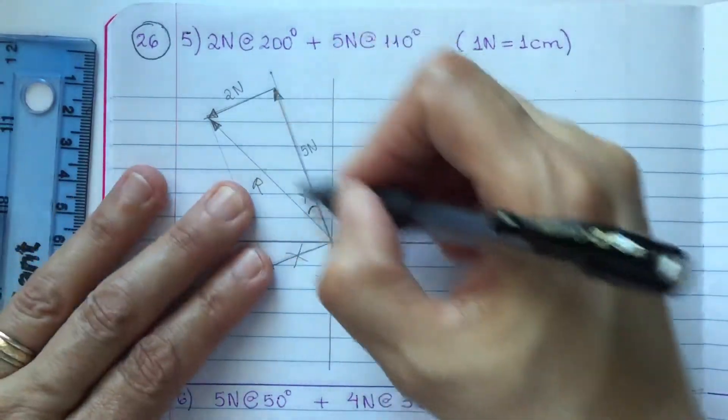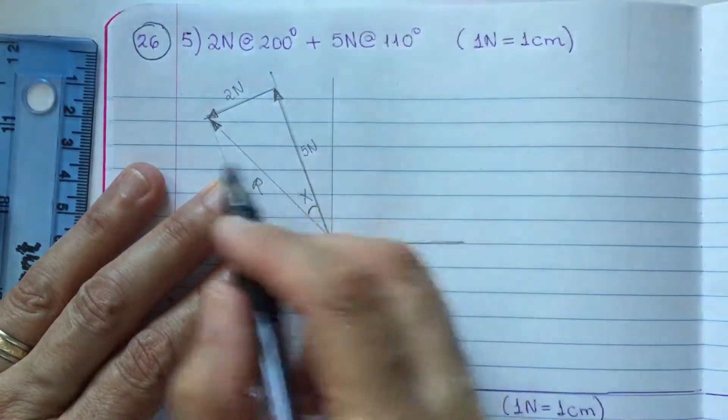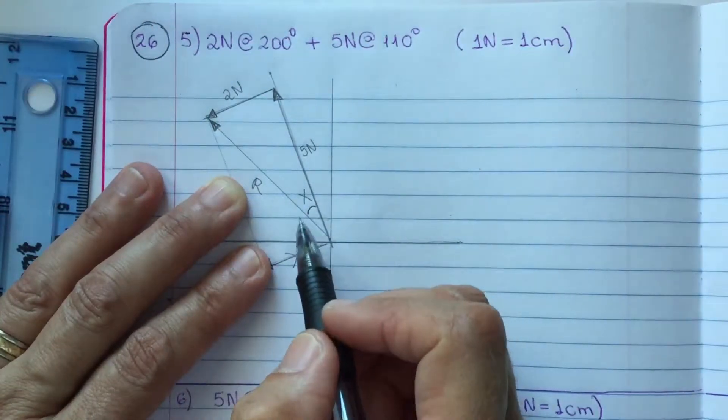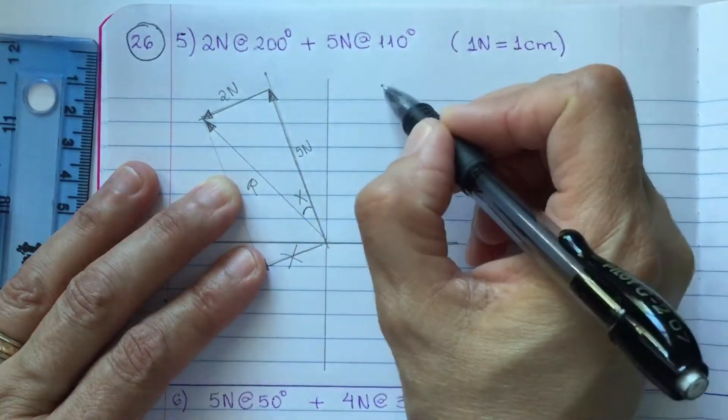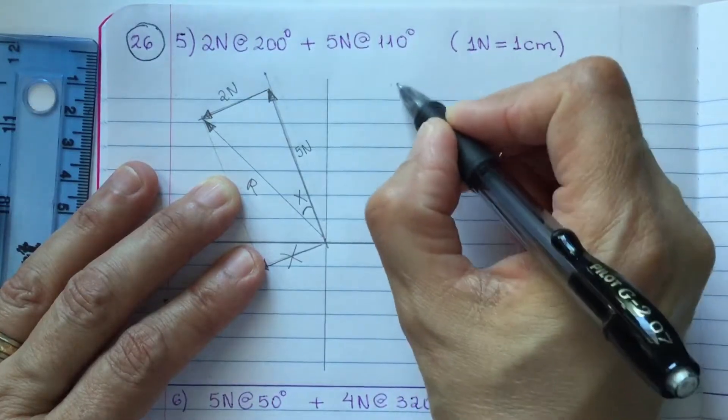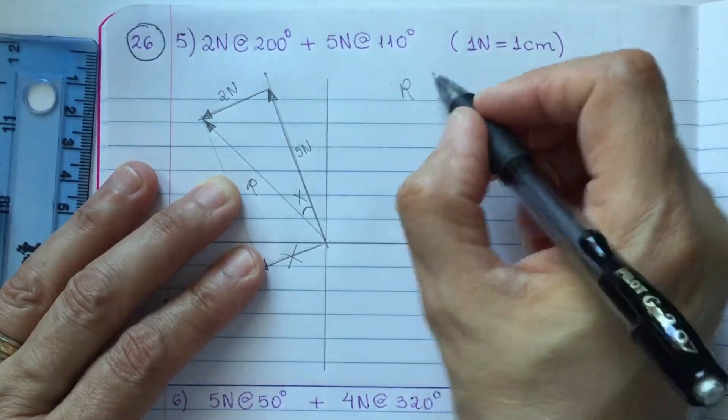So, because this is a perfect right triangle, so my resultant is the hypotenuse. So, I can use Pythagorean theorem to find my hypotenuse.